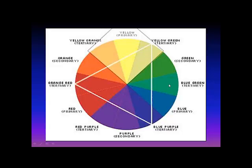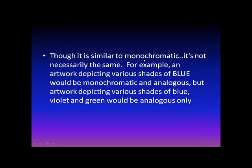Yellow-green is a tertiary, blue-green is a tertiary — you can read the map, right? So your analogous colors are those that are surrounding it. Though it's similar to monochromatic, it's not necessarily the same. For example, an artwork depicting various shades of blue would be monochromatic and analogous.